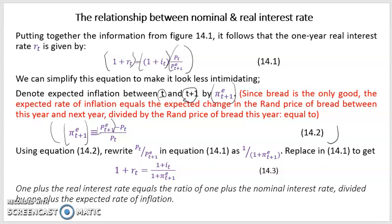Expected inflation equals the expected price minus the current price, divided by the current price — which is basically what we would do when calculating inflation. Using equation 14.2, we rewrite the part P_t over expected price in equation 14.1 as 1 divided by 1 plus expected inflation, and we make that replacement in equation 14.1.